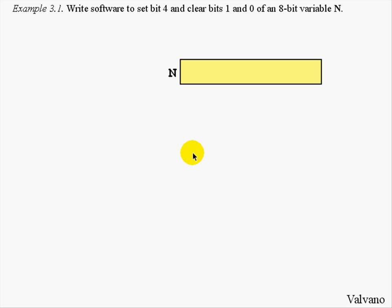The problem states to write software to set bit 4 and clear bits 0 and 1 of an 8-bit variable. So the first question is, what's a variable? In this case, we have a variable N, which will be 8 bits wide and will exist in memory.